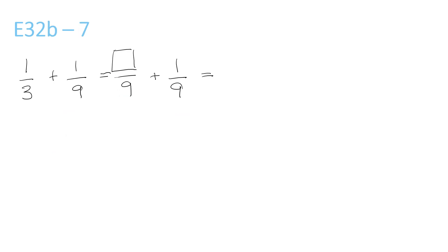This one's different — it's 9. 3 and 9: the number that they both go into is 9. 3 times 3 is 9, so that means you have to times the top by 3 — 1 times 3 is 3. Add the top numbers: 3 plus 1 is 4 over 9.